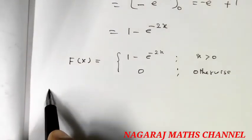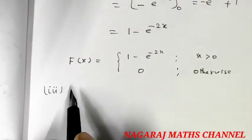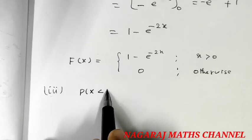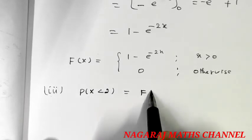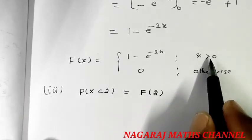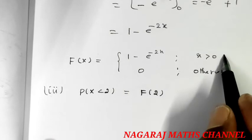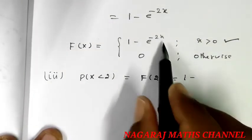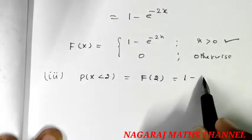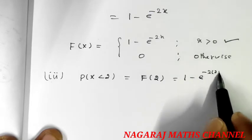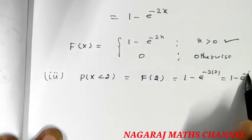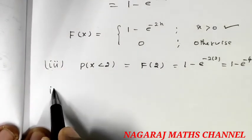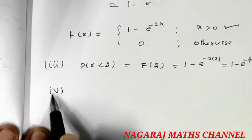For question 3, P of x less than 2 equals F of 2. Since x equals 2 is in the first interval, this is 1 minus e to the power of minus 2 times 2, which equals 1 minus e to the power of minus 4.